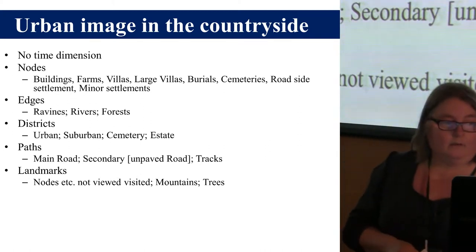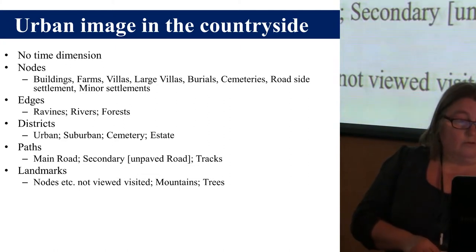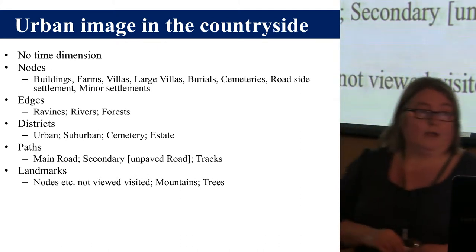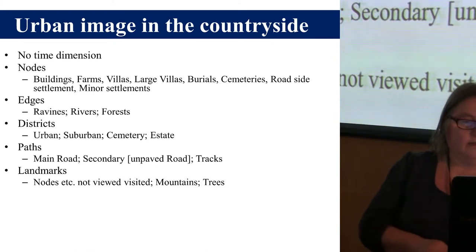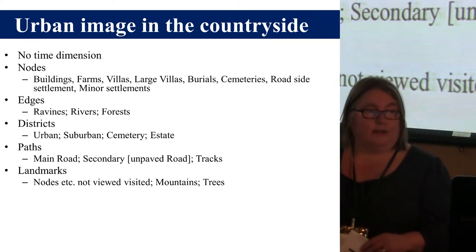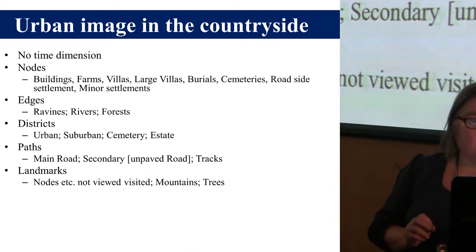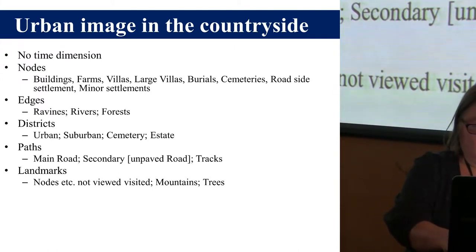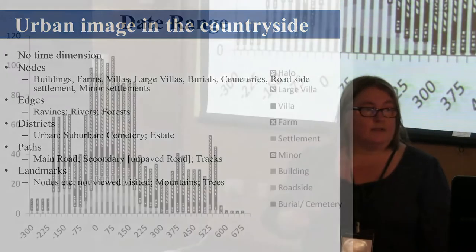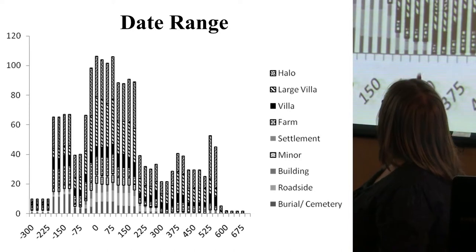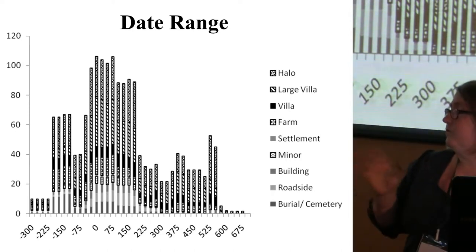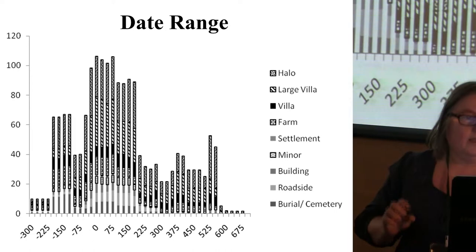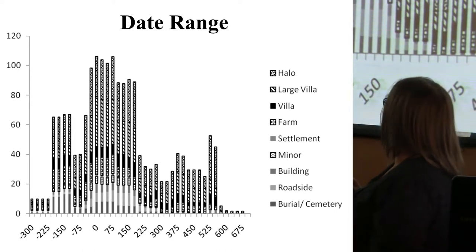You can define main Roman roads separate from non-paved secondary roads, and you can define certain landmarks — the kind of nodes which are not visited, which only direct your movement around the landscape. And this is the date range of Roman pottery, which is the dataset we have used in this project. It doesn't really differ from any central Italian survey.